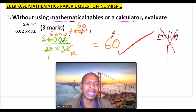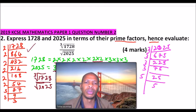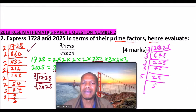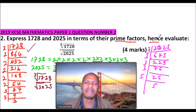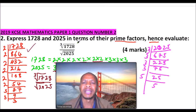Let's go to question number two. Here we have express 1728 and 2025 in terms of their prime factors, hence evaluate. You covered this in form two. You can watch this video and be able to work out and get the cube root of 1728 and also the square root of 2025.